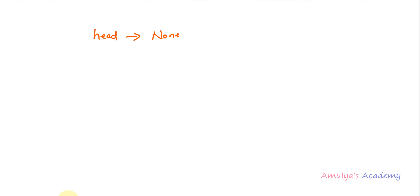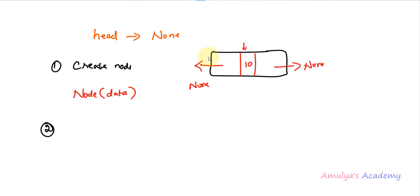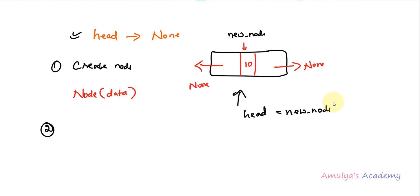First let's see how to insert a new node when the linked list is completely empty. When doubly linked list is completely empty, head will point to None. At that time the first step is we need to create the node — for example with data 10. When we call the node class, it will create a node with two links, both defaulting to None, along with the data field. After creating the node, we need to point head to the new node: head equals new node.